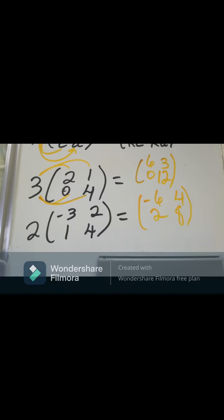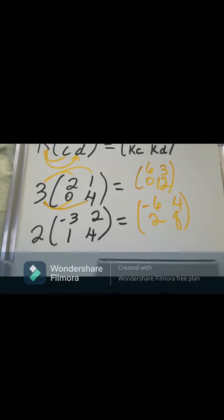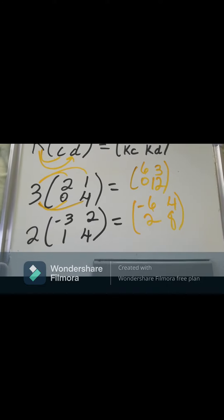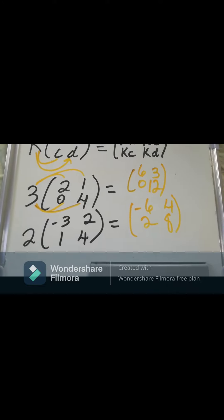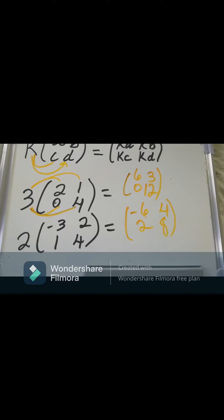At the bottom, on our next problem here, we got 2 multiplied by minus 2, minus 3, 2, 1, and 4. And we're going to multiply 2 by everything. So we're going to be doubling.